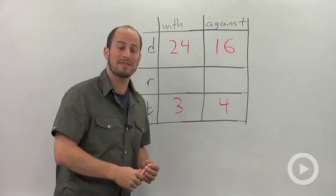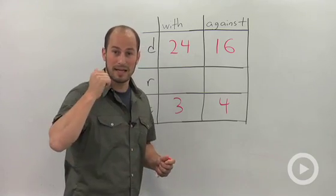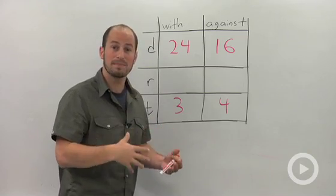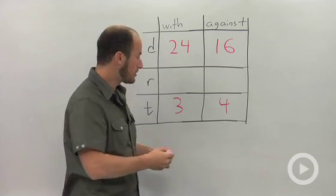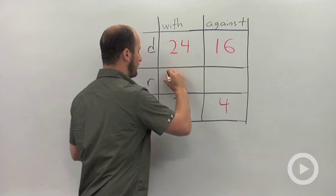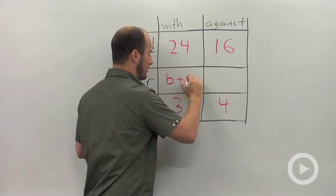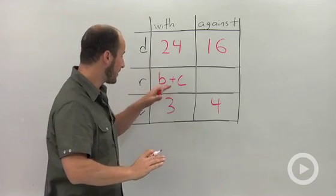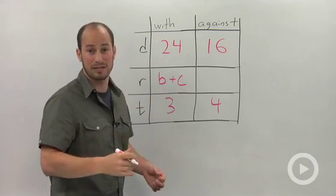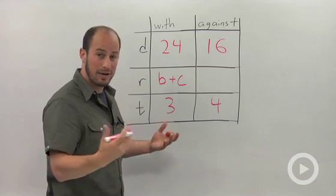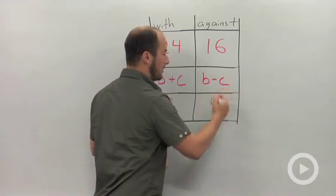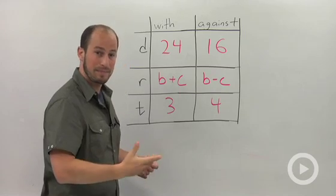What we have left is our boat speed and our current speed. When we are traveling with the current, the speeds work together, so we can end up with boat plus current. I'm a big fan of using letters that make sense in the problem, so B is going to be boat speed, C is going to be current speed. Against the current, it's slowing the boat down, so we end up with B minus C.